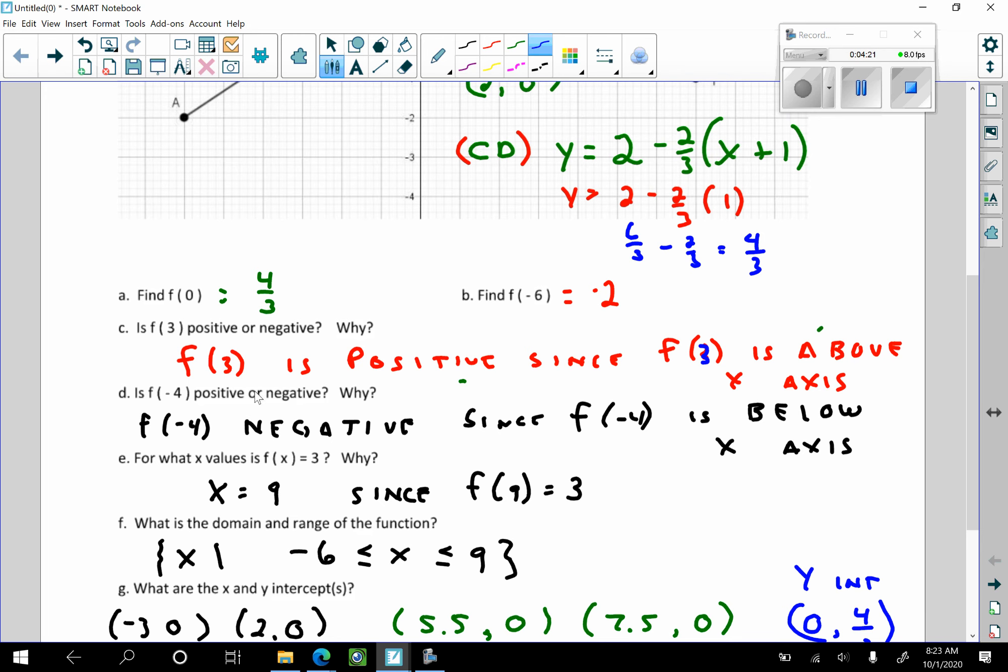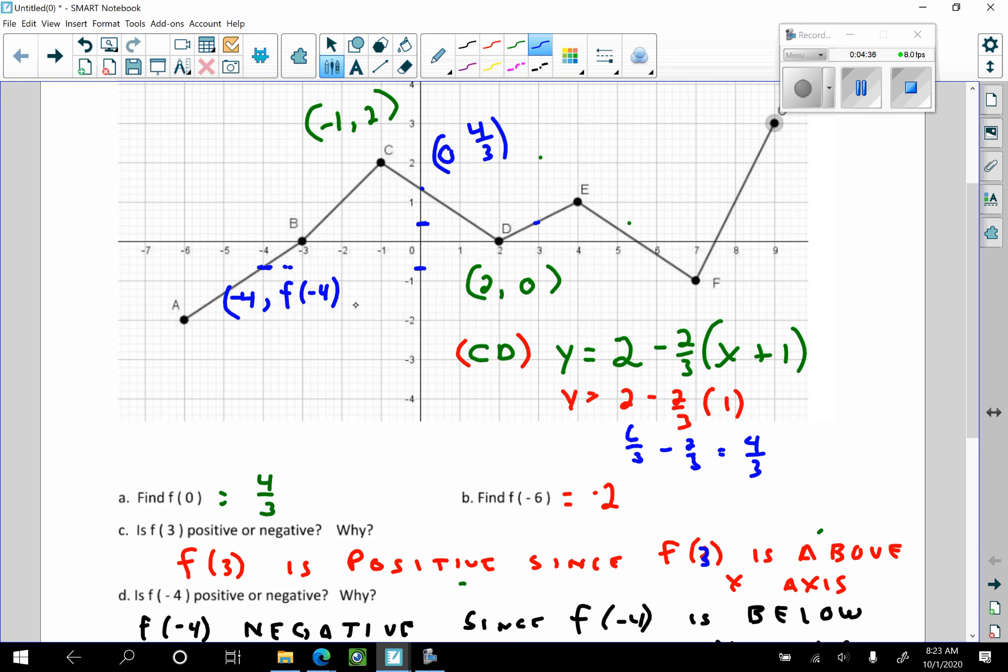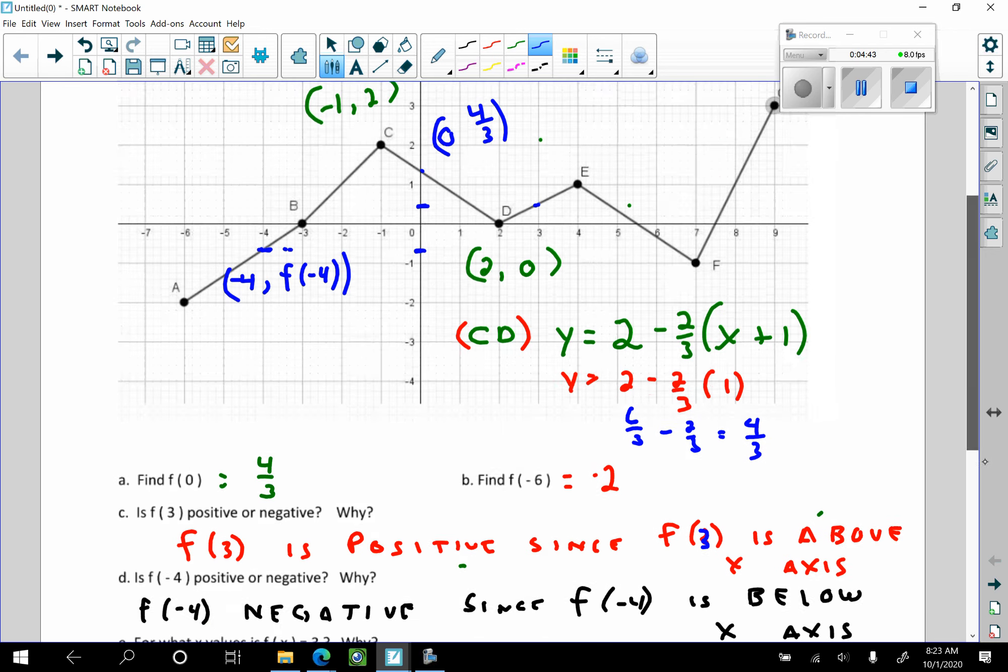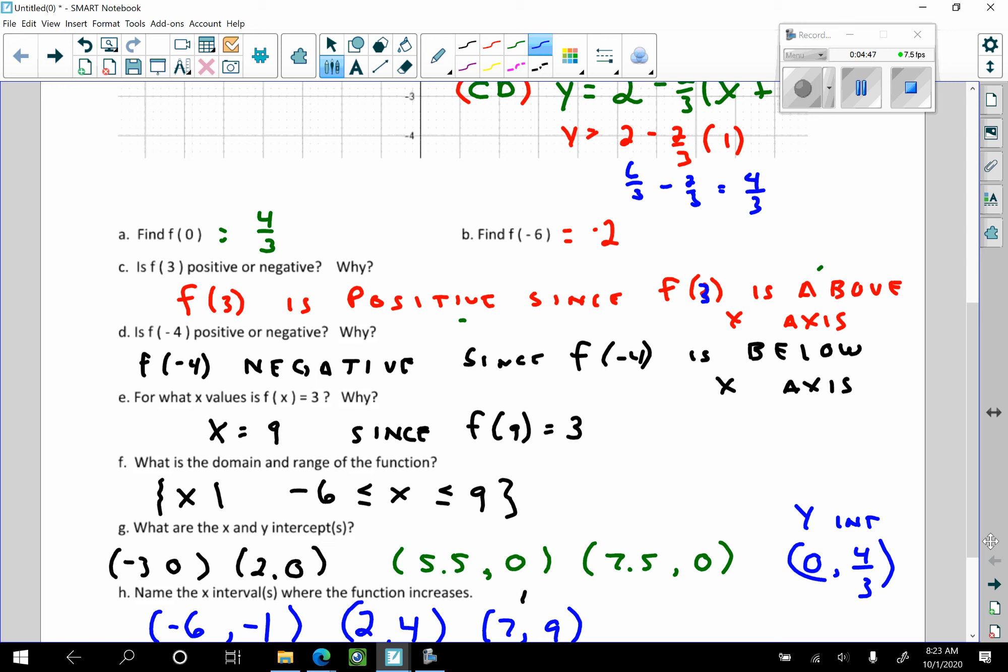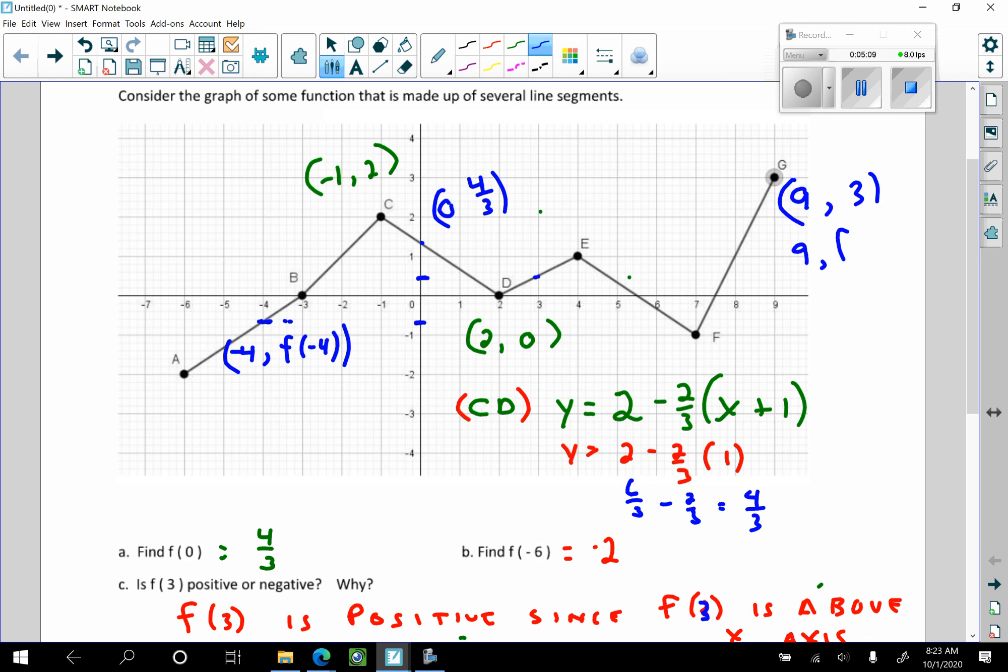And in like manner, f of negative 4, which is this value right here. This is f of negative 4. Because that's negative 4, f of negative 4. And that is a y value. What y value is it? It's that y value there. Nobody asks you to find it. They're just wondering, is it positive or negative? And it is negative. Why? Because f of negative 4 is below the x axis. Solve this equation. What x value is such that f of x is equal to 3? x is 9. Why? Because f of 9 is 3. This point right there is 9, 3. Or 9, f of 9. And f of 9 is 3.